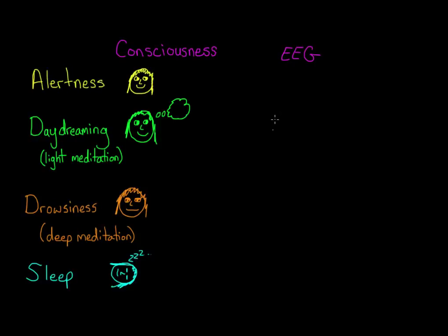There are four main types of brain waves that we associate with different states of consciousness: alpha, beta, delta, and theta. Each of these types of brain waves oscillates at a different frequency and is associated with a particular state of consciousness.